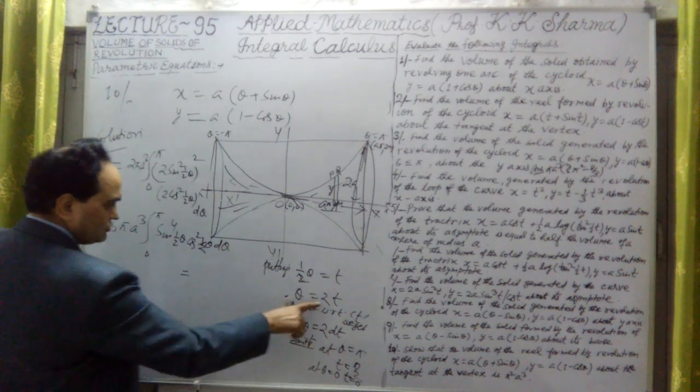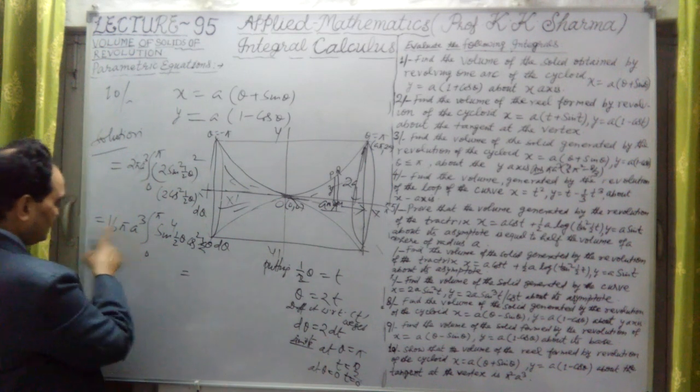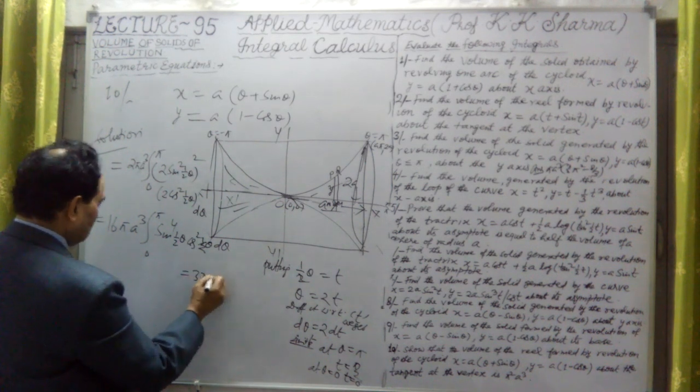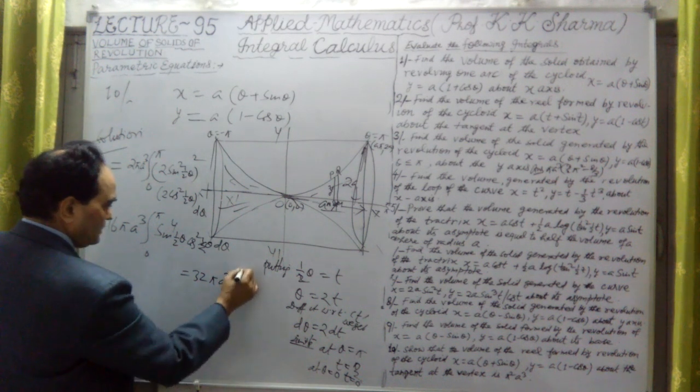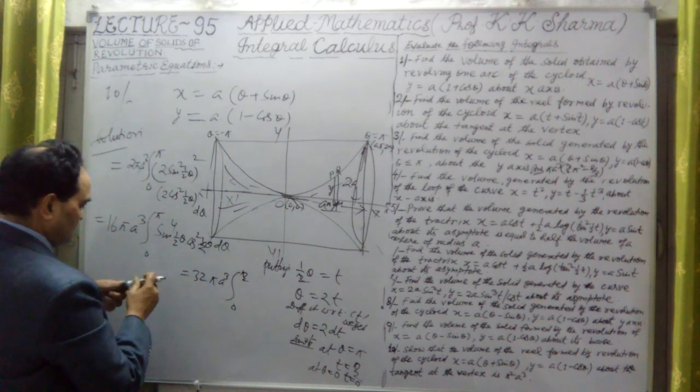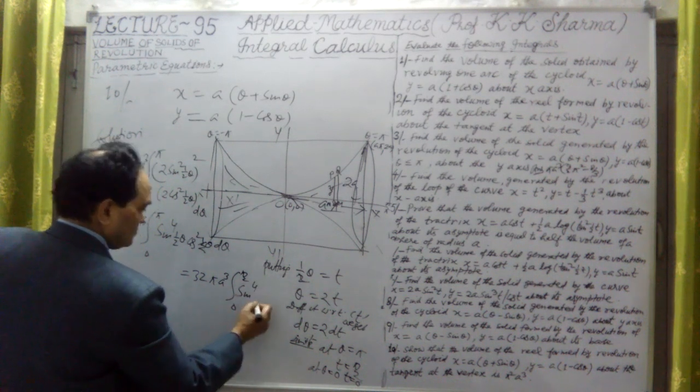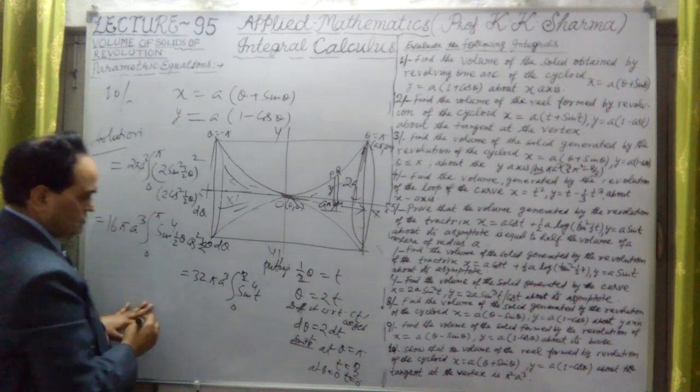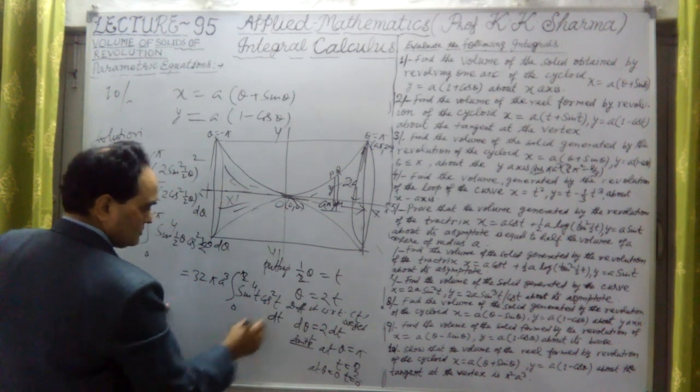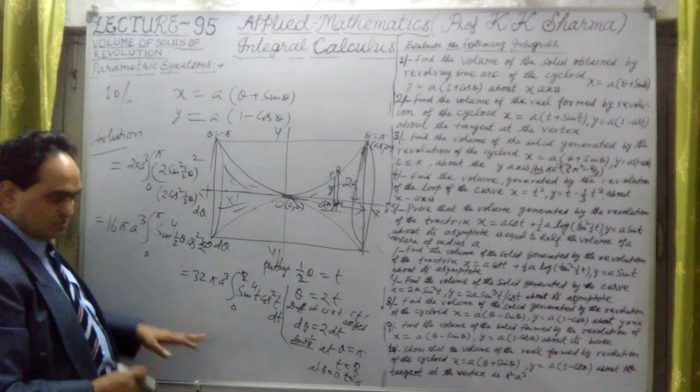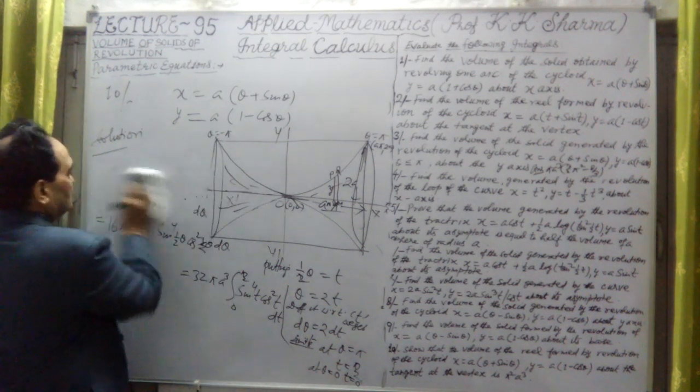What do we obtain? This is d theta equal to 2 dt. Here 2 into 16 is 32 pi a cubed. Here it is 0 to pi by 2, and sine 4t, cos squared t into dt. This is the integral.